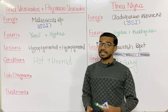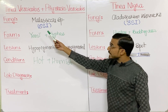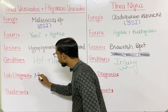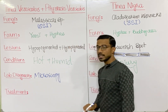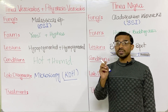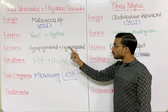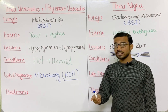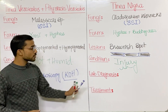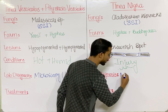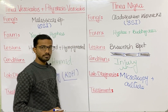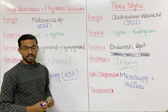For lab diagnosis of Tinea Versicolor, you will use microscopy with KOH preparations. You take a scraping of the hypopigmented or hyperpigmented lesion and check for fungi in the KOH preparation. For Tinea Nigra, you also use microscopy, or you can go towards culture to confirm the infection.